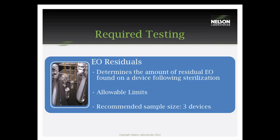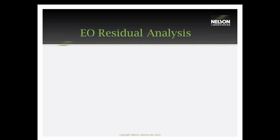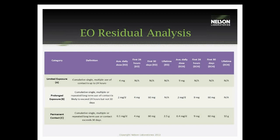For this testing, the devices will be immersed in an extraction fluid and extracted for an appropriate amount of time. The amount of time will vary based on the device. There are three product categories: limited exposure, prolonged exposure, and permanent. Limited exposure is any device used for less than 24 hours cumulatively — whether used once or multiple times by the same patient, it cannot exceed 24 hours total. Prolonged exposure is any device used for longer than 24 hours but not exceeding 30 days. Permanent contact applies to something that will have patient contact exceeding 30 days.